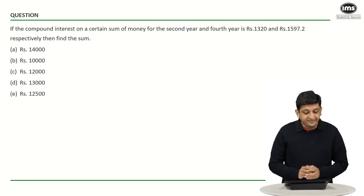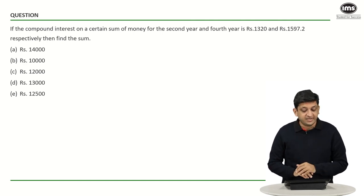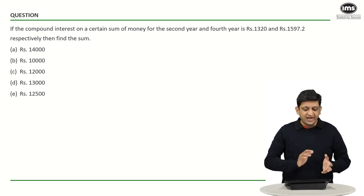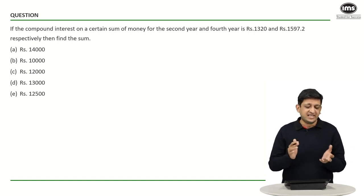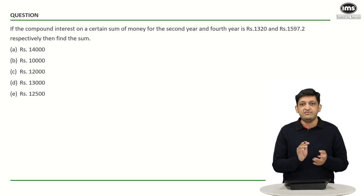In the first question, if the compound interest on a certain sum of money for the second year and the fourth year is 1320 and 1597.2 rupees respectively, then we have to find this sum.